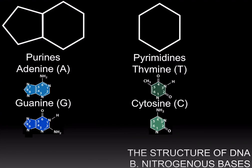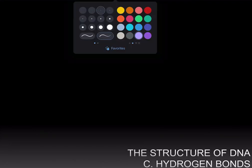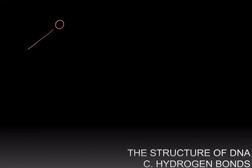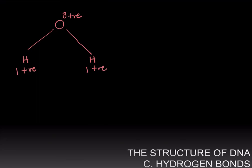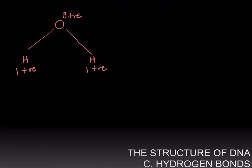Before we discuss the structure of DNA further, let us define what hydrogen bonds are. This is best done with the example of the water molecule, which has an oxygen atom covalently bonded to two hydrogen atoms. Oxygen has an atomic mass of eight and therefore there are eight protons in its nucleus, giving eight positive charges. Hydrogen has one proton and therefore one positive charge. The electrons shared between the oxygen and the hydrogen are floating around somewhere between those atoms.